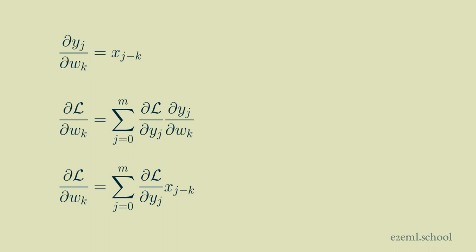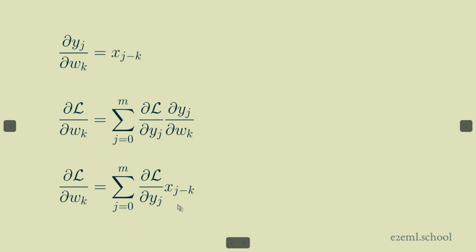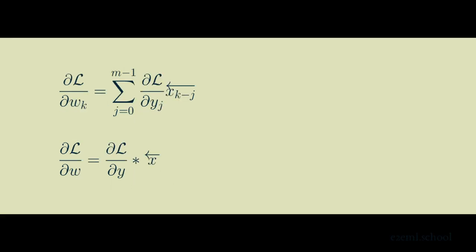Substituting that into our expanded chain rule, the weight gradient for each weight equals the sum of the output gradient for each output element times the input value x sub j minus k. For completeness and symmetry, we can take x sub j minus k and flip it about the zero index, representing it as x sub k minus j.